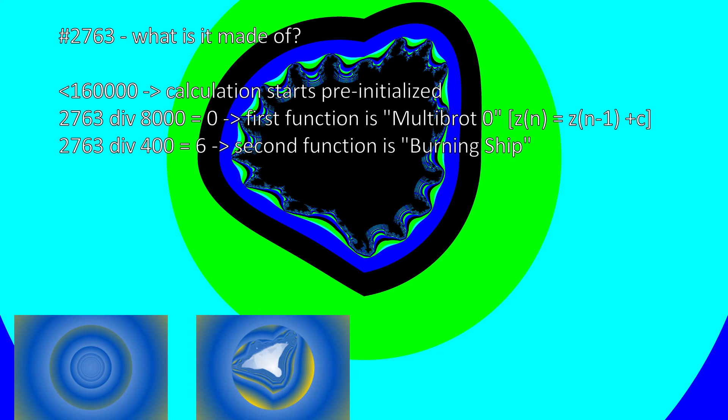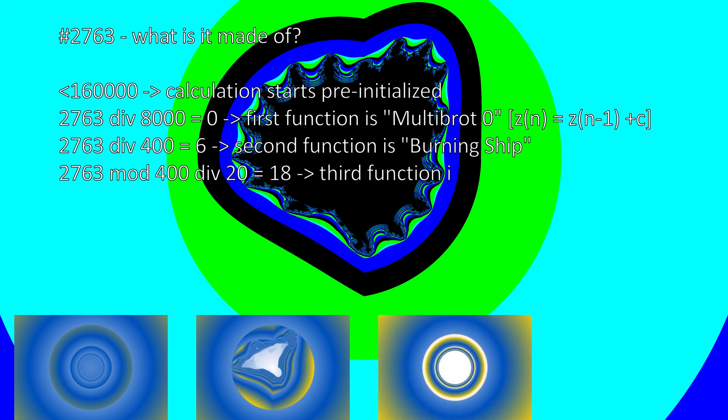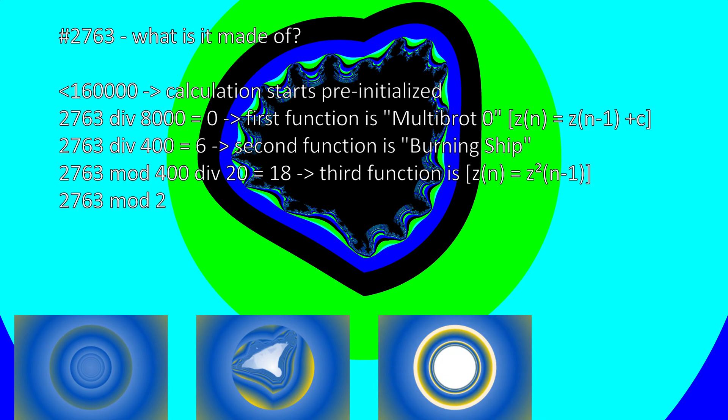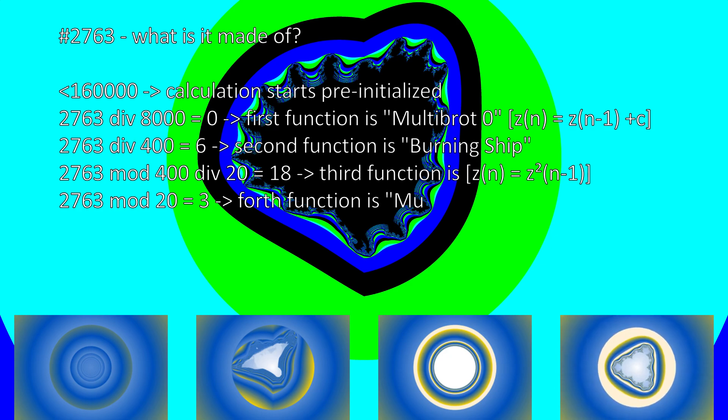363, the remainder of the previous calculation, divided by 20 is 18 point something. So the third function just squares the result. 2,763 modulo 20 is three. The fourth and final function used is the multibrot four. The last two together behave almost like a multibrot eight, and this should be reason for the many polyps.